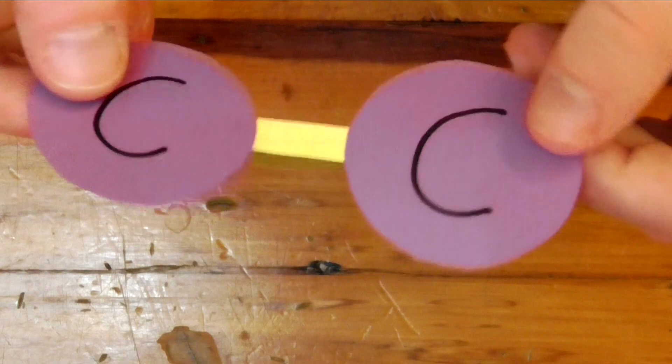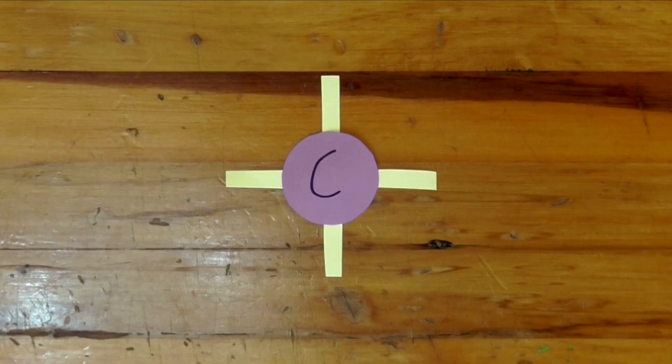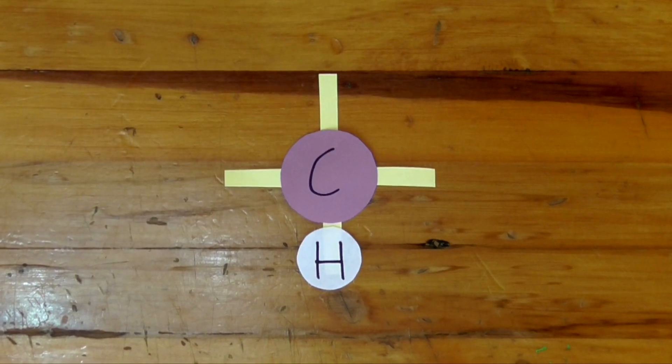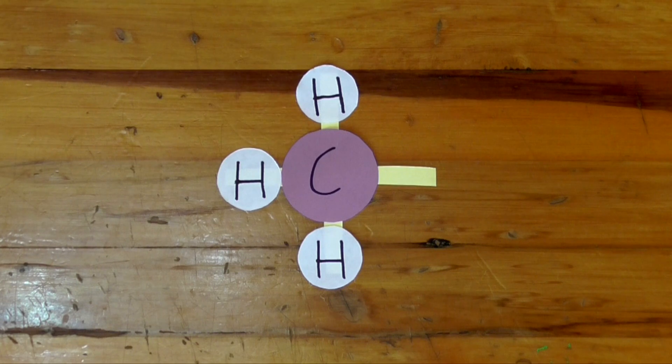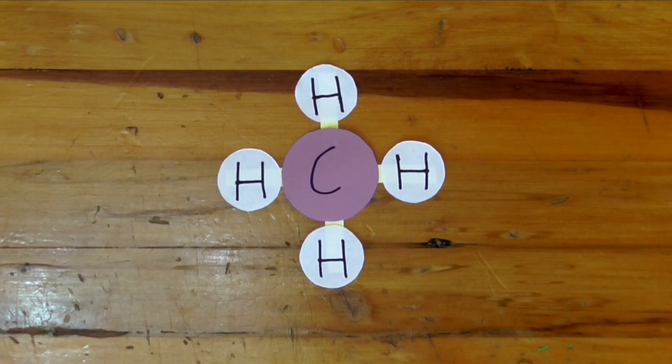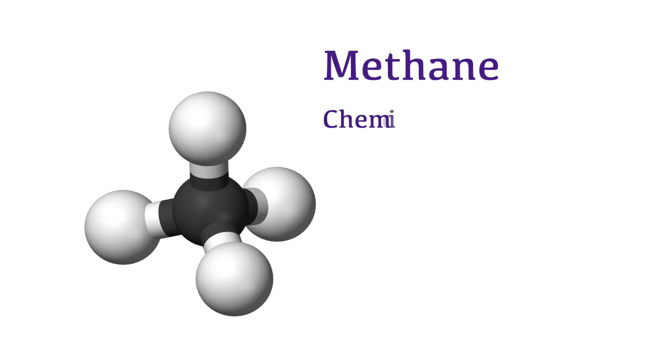Covalent bonds are fairly strong, and each carbon atom can take part in up to four of them. For instance, one carbon atom can share electrons with four hydrogen atoms in a setup like this. We have just formed the simplest possible organic compound, methane.